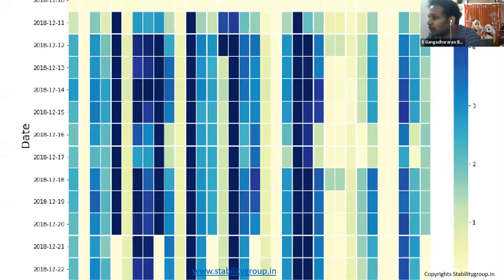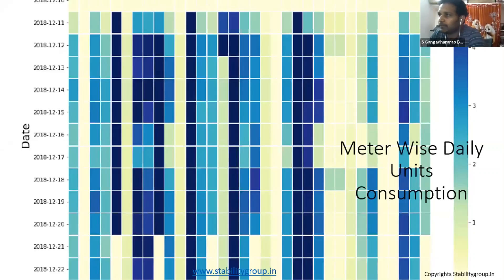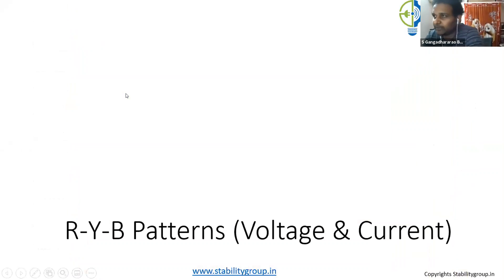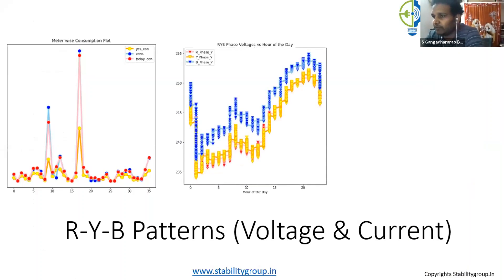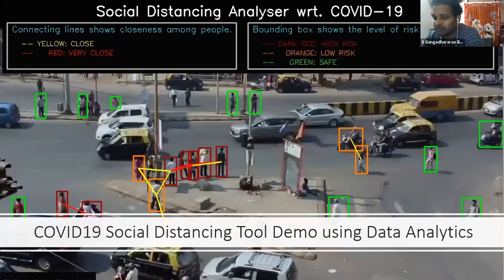We have a heat map that I can assure you won't be available from any supplier in today's market. This heat map shows which machine is consuming the most energy. You can scroll over it, put a cursor, and directly identify which meter is consuming the most. This is data science terminology delivering value to the customer. I'm moving fast — if I'm going too fast, please type in the chat window.